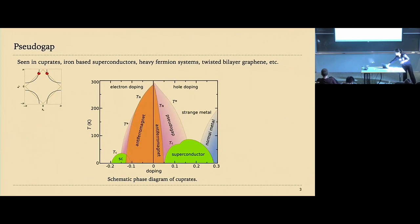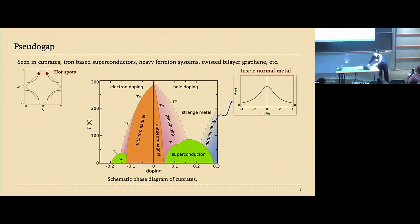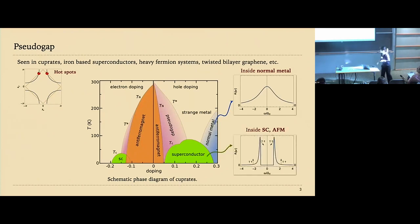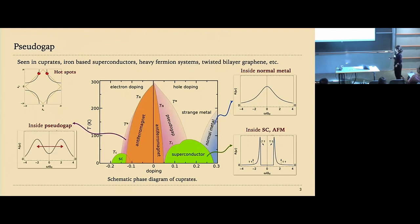The hotspots are points most sensitive to the anti-ferromagnetic fluctuations. Let me show the spectral function at this point for various states in the phase diagram. In the ordered state — the superconductivity state or anti-ferromagnetism — the spectral function is peaked at finite frequency, and this gap is determined by the size of the order parameter. For the pseudo-gap, there is no long-range order, but the spectral function still shows a maximum at finite energy.